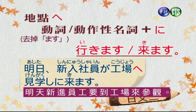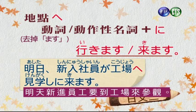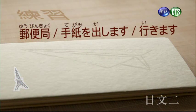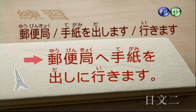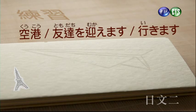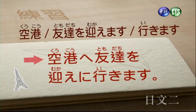明日新入社員が工場へ見学しに来ます（明天新進員工要來工廠參觀）。見学しますのmasを換成移動性目的的に，變成見学しに来ます。練習：郵便局へ手紙を出しに行きます（去郵局寄信）。空港へ友達を迎えに行きます（去機場接朋友），所以目的是去迎接朋友。